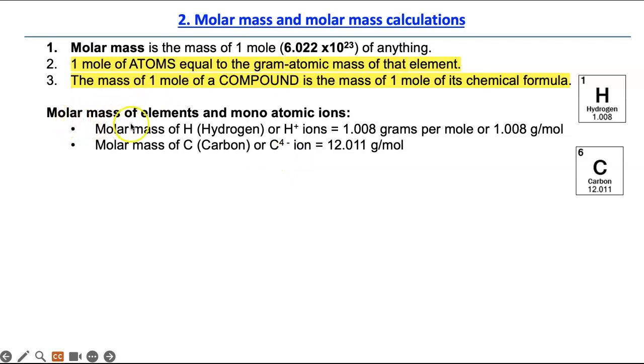So we know that a molar mass of something is the mass of 1 mole of that thing. 1 mole of atoms is equal to the gram atomic mass of that element found in the periodic table. And the mass of 1 mole of a compound is the mass of 1 mole of its chemical formula. Let's look at some problems. First, let's calculate the molar mass of an element or a monoatomic ion. You just ignore the charge, and you just calculate the mass as if it was an element. So for hydrogen, it's 1.008 grams per mole, or you write it g divided by mol. That's the unit for molar mass. Please remember that. Molar mass of carbon, or C4 minus ion, is the same as a carbon element. So it's 12.011 grams per mole.